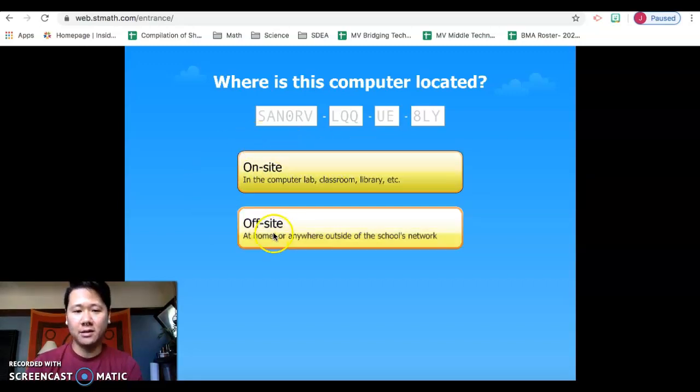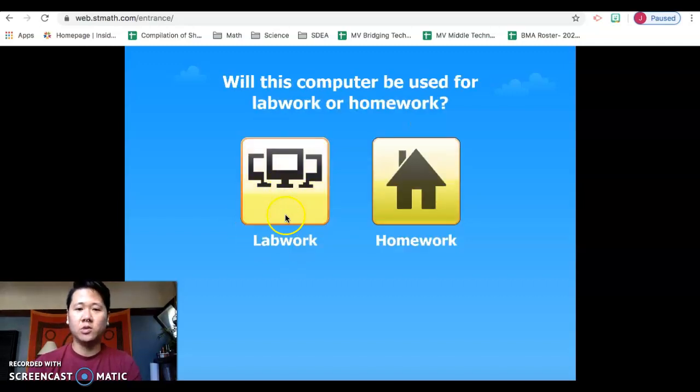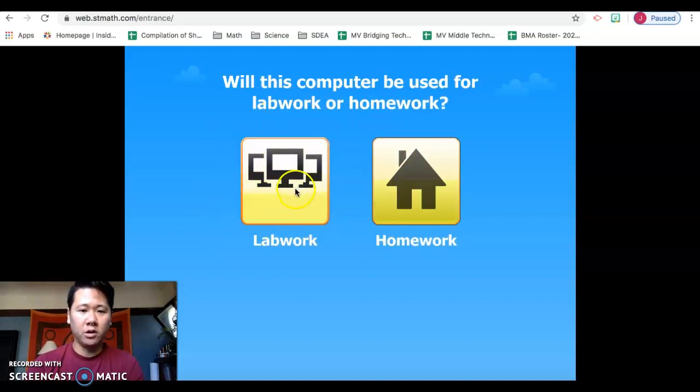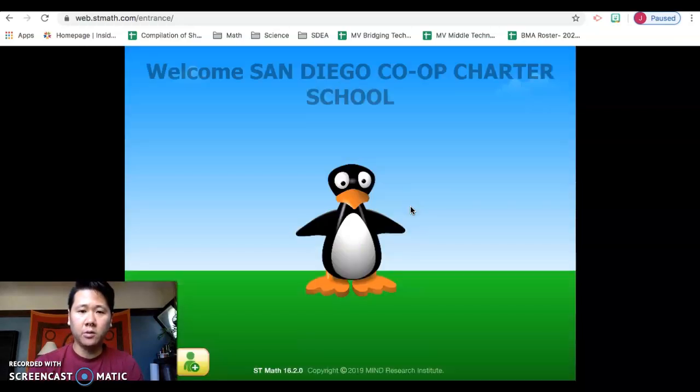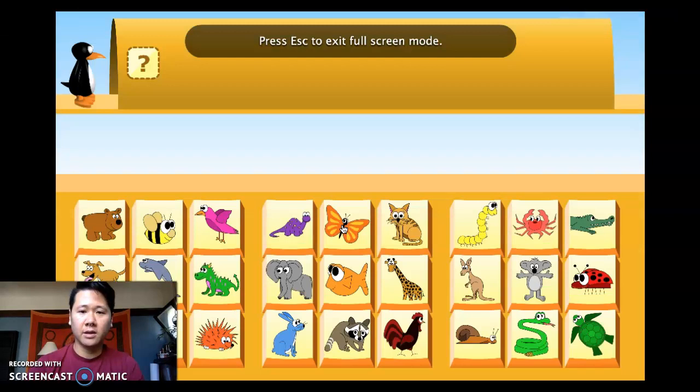But if you accidentally click off site, it's going to look a little bit different. It's going to ask you, do you want to do lab work or homework? So you're going to want to click lab work. It says welcome to ST Math, and it will give you your screen where you can click GG again and enter in your password.